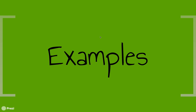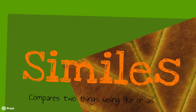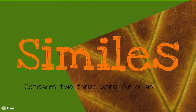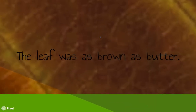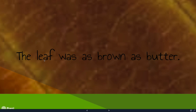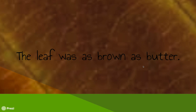Now we're doing examples. For similes — comparing two things using 'like' or 'as' — here's one: 'The leaf was as brown as butter.' Normally we wouldn't compare a leaf and butter, but here we're comparing the color of the leaf to butter, maybe like burnt butter.